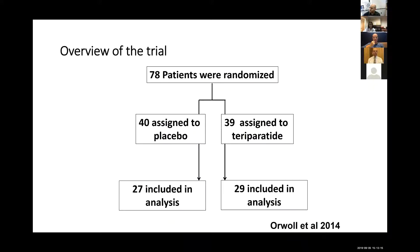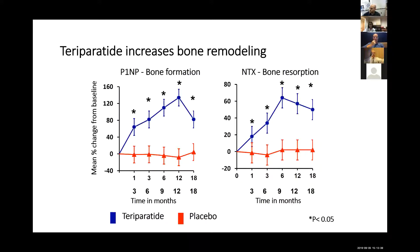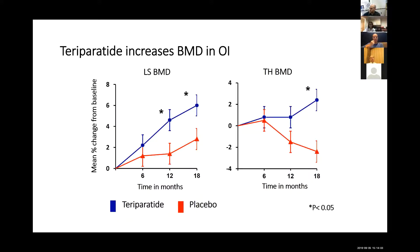This was a study led by Eric Orwoll, who everyone heard from a couple of months ago. Our site as well as a couple of other sites participated. This is a trial of adults with osteogenesis imperfecta — 78 individuals randomized to either get placebo or teriparatide. What was noted is that with teriparatide in OI, there were indicators of increased bone remodeling, with increased NTX and P1NP in those receiving teriparatide as compared with placebo, as well as increases in lumbar spine bone mineral density and bone strength as measured by a variety of methods shown here.